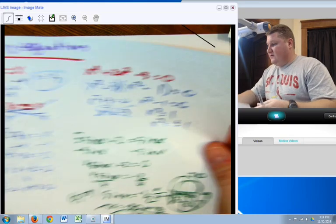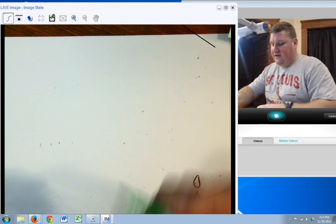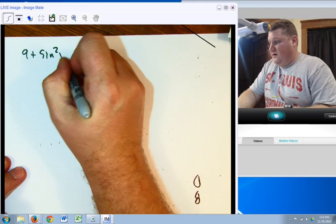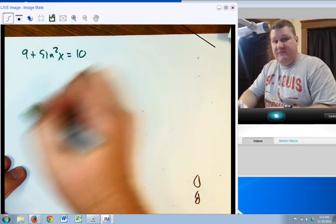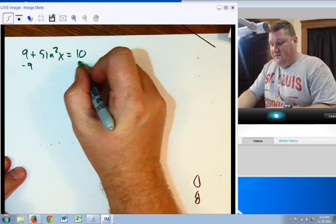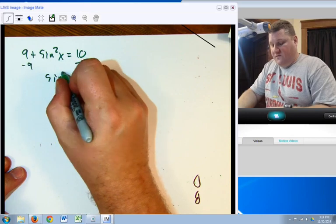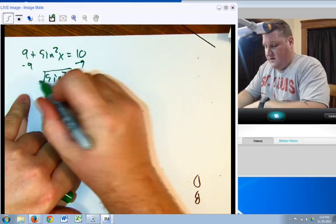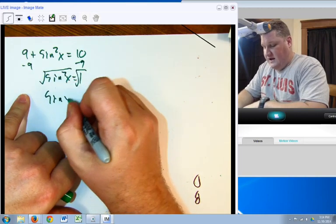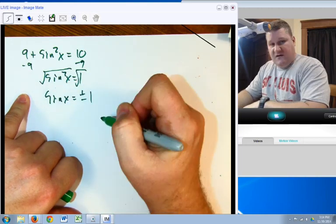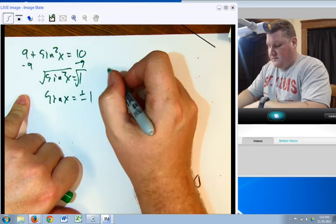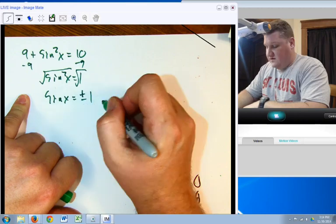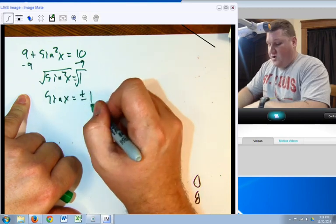Okay, let's take a look at the next one. The next one, we have 9 plus sine squared x equals 10. Obviously, we're going to subtract 9 from both sides. Sine squared x equals 1. Okay, we're going to take the square root both sides. Sine x equals plus or minus 1. Now, this becomes important because we're looking for the place where sine x is either equal to positive 1 or negative 1.